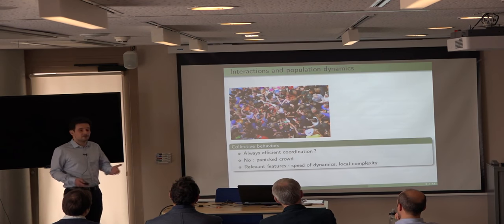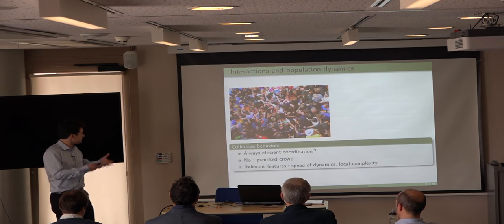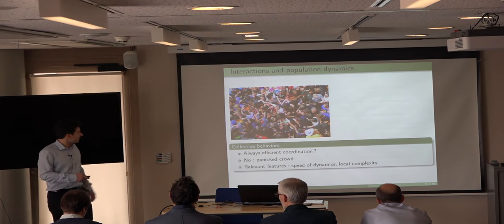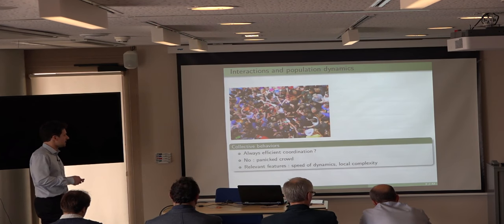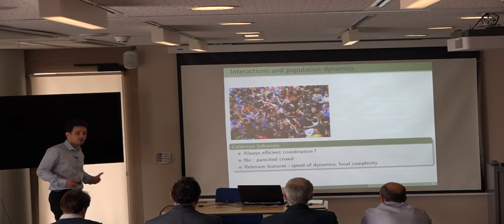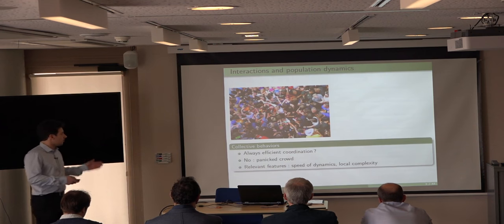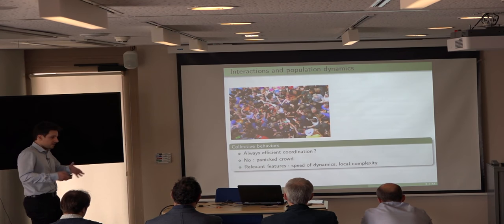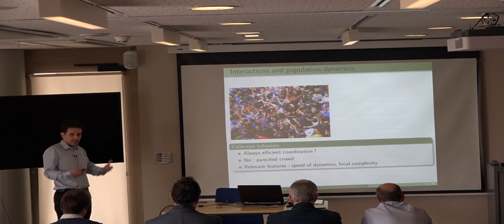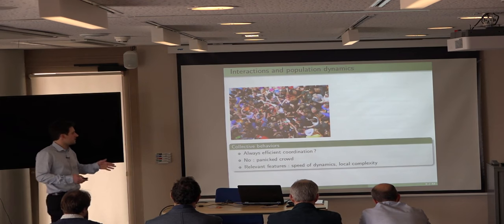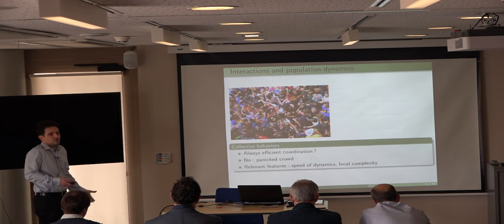So what are the relevant features? What characterizes efficient behavior? There are two features we can identify. The first is the speed of the dynamics — for example, if you have a task about moving or reaching a consensus or exploring, how fast do you complete it? The second is local complexity: in my local environment, what is the local situation? Am I just moving along the other fish, or am I packed in a crowd and can't really choose the exact direction I go?